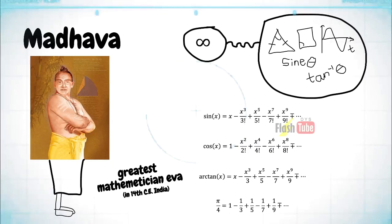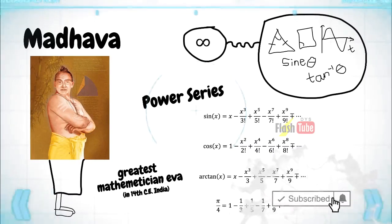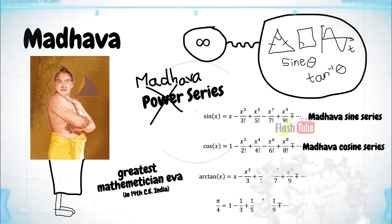So you see these expansions here? You know the one that we call the power series expansions? But nope, they're actually called the Madhava series. This is the Madhava sine series, this is the Madhava cosine series, and this is the Madhava arctangent series.